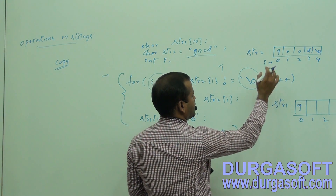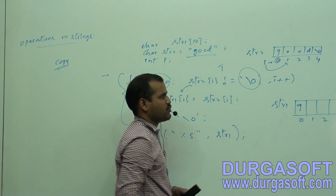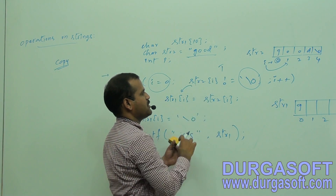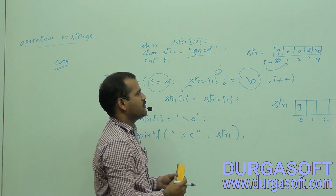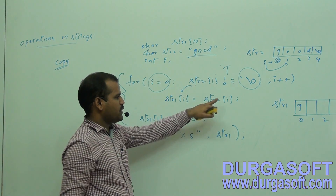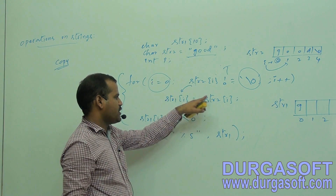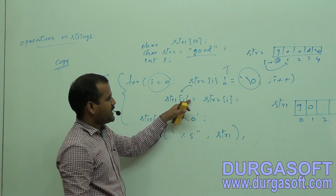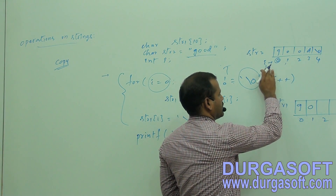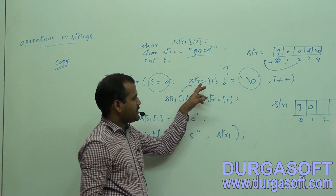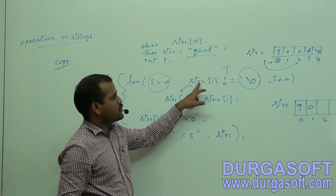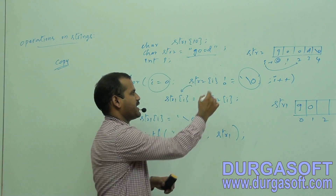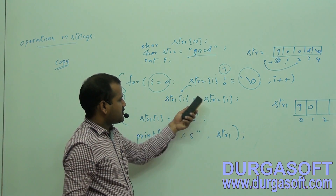Then i is incremented to 1. When i equals 1, string2[i] is 'o'. Since 'o' is not equal to the null character, the condition is true. The second character of string2 is assigned to the second byte of string1, so 'o' is stored there. i is incremented again to 2. string2[2] is also 'o', which is not equal to the null character, so the condition is true again and this assignment is repeated. 'o' is stored in the third byte of string1.